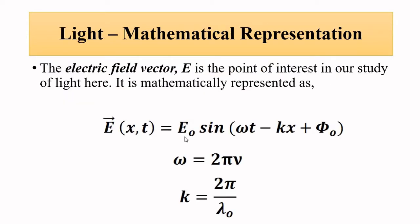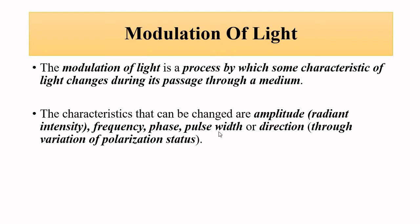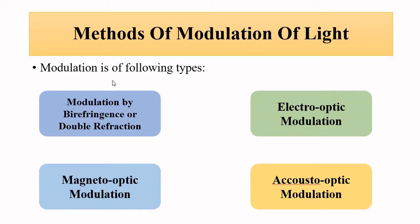The parameters that can be changed include amplitude, frequency, phase, and we are only concerned with the electric component — the electric field vector of the light wave. So the process of modulation changes such parameters: amplitude, frequency, phase, or polarization status. In this video, we'll be discussing the first method: modulation by birefringence or double refraction.